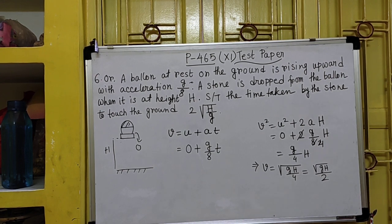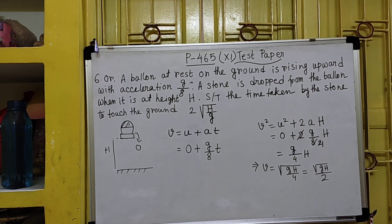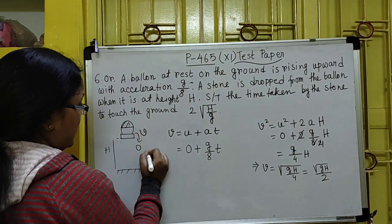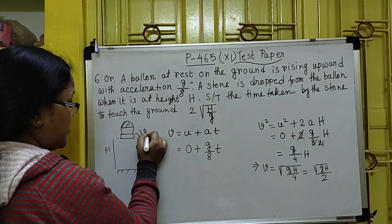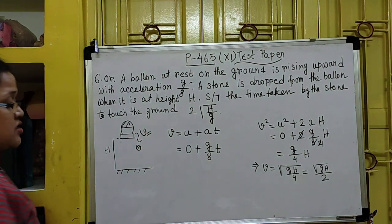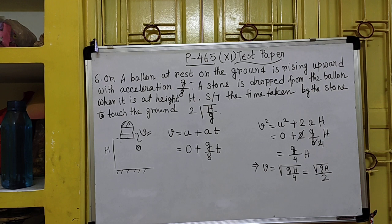Now, when the stone is released from the balloon, the balloon is continuously moving with velocity V. So at that point of time, we are having velocity V. The stone has the initial velocity V upward. After that, when it reaches the ground, we apply the equation of motion.